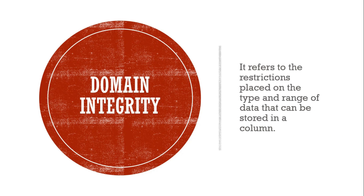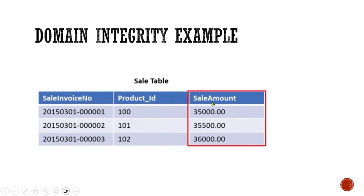Last is domain integrity. It refers to the restriction placed on the type and range of data that can be stored in a column. For example, consider the sale amount column in the sale table. With domain integrity in place, the database will ensure that values stored in the sale amount column are numerical — specifically a float data type, which is a decimal point value. This helps prevent errors in data entry and ensures the data stored in the database is accurate and consistent.